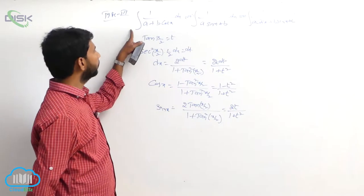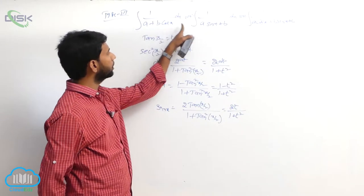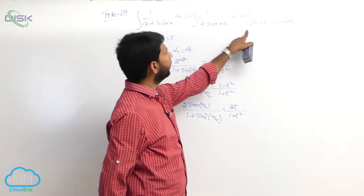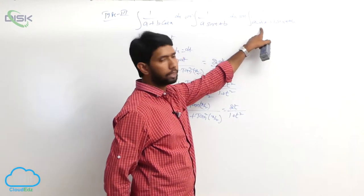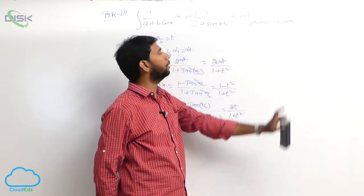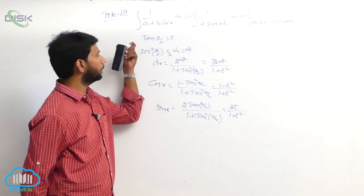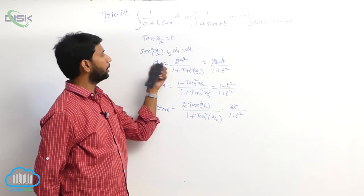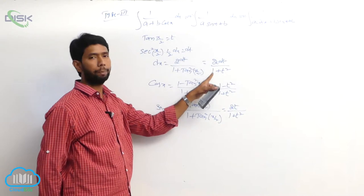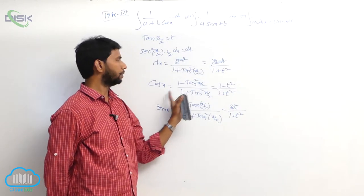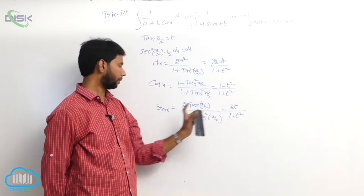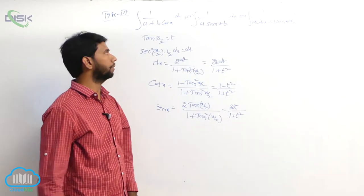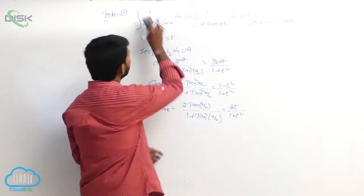This type of problems — integral of 1 by (a plus b cos x), or 1 by (a sin x plus b), or integral of 1 by (a cos x plus b sin x plus c) into dx — can be solved by taking tan(x/2) equal to t. dx equals 2 dt by (1 plus t square), cos x equals (1 minus t square) by (1 plus t square), and sin x equals 2t by (1 plus t square). Go to examples.